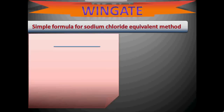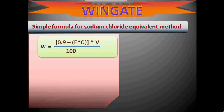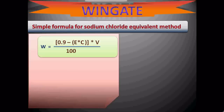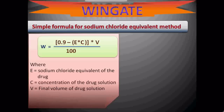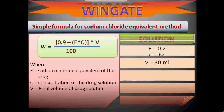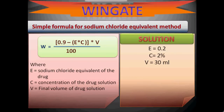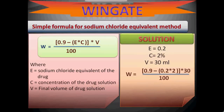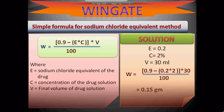A simpler direct formula for the Sodium Chloride Equivalent method: W (weight of NaCl to add) = (0.9 − E × C) × V / 100, where E is the NaCl equivalent, C is the drug concentration (%), and V is the final volume. Substituting: W = (0.9 − 0.2 × 2) × 30 / 100 = 0.15 g. This confirms option C.